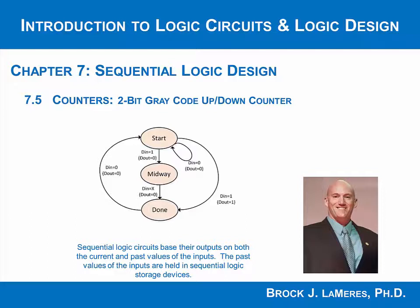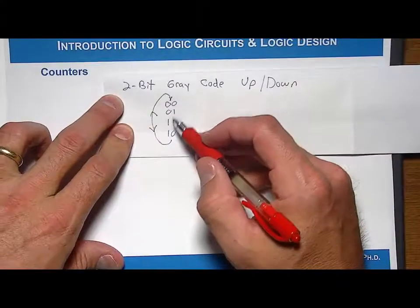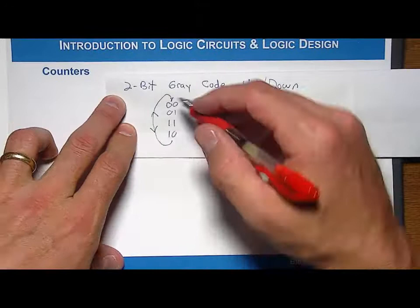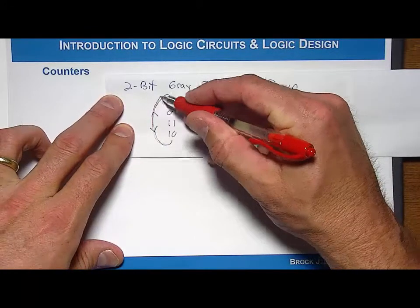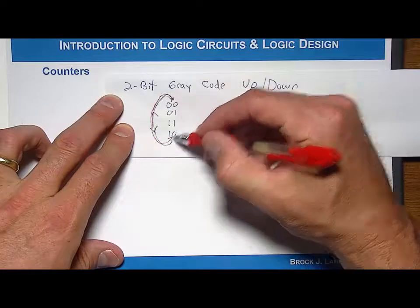Now let's look at a 2-bit gray code up-down counter. This is going to be a counter that still produces an output of 00, 01, 11, 10, except that we're going to have an input signal which will tell whether we're going to traverse it like this and count up, or we're going to traverse it backwards and count down.